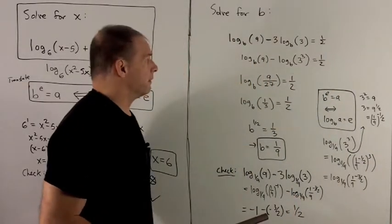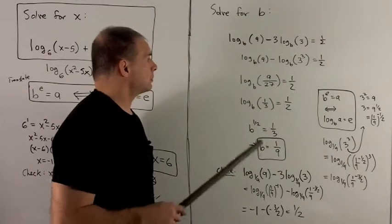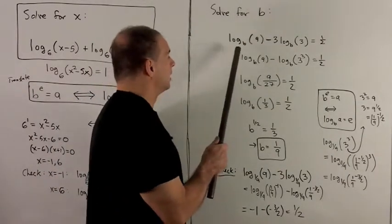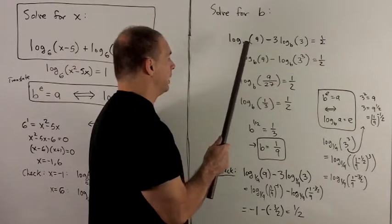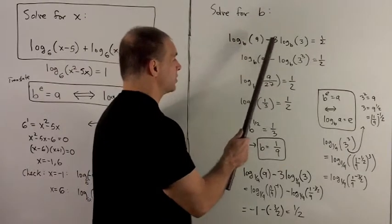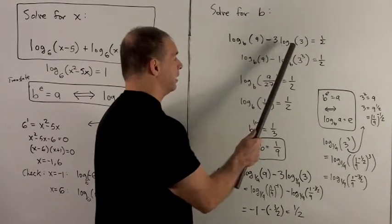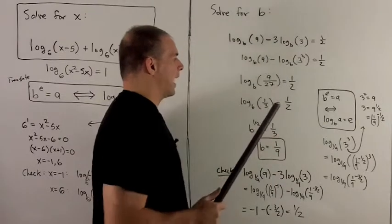Let's try another one where we don't have the base. So my equation is going to be log base b of 9 minus 3 log base b of 3 equals 1/2.